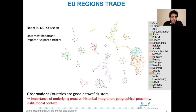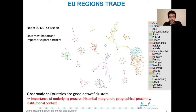And here we come back to the importance of the underlying processes behind link formation. In this case, regions within the same countries share the same history, they are geographically close, and they share the same institutional context. All these reasons favor their interactions, and here in particular, their trade.